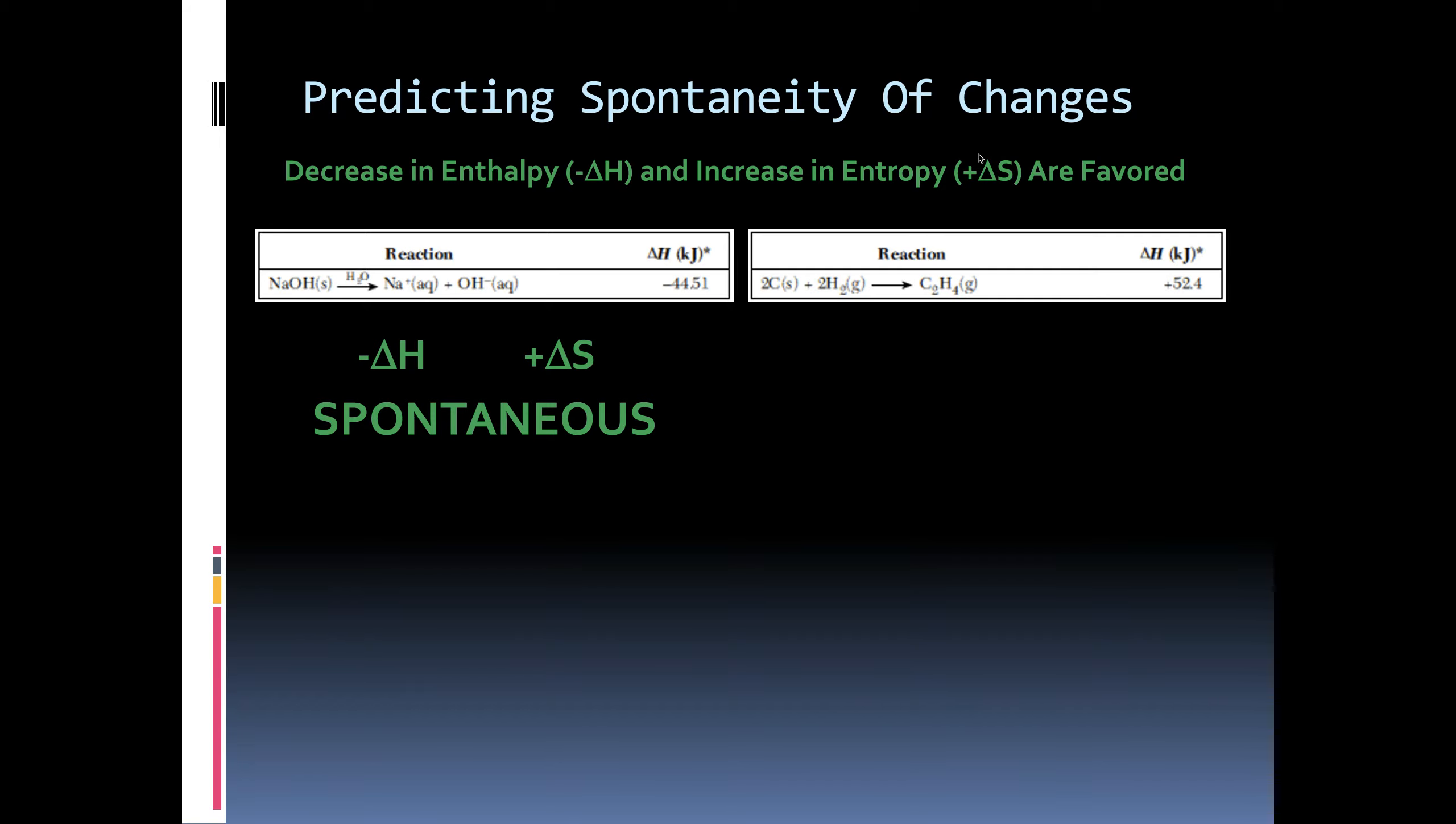How about this? In this reaction, we have a positive delta H. It says so right there. See, plus negative delta H is favored. So a positive delta H will not be favored. No bueno. All right. What about the entropy? Well, we're starting off with solid and gas, and we're ending with gas. However, we started with two moles of gas, and we're only ending with one mole of gas. There's less gas flying around. And with less gas flying around, that's lower entropy. Nature likes increasing entropy, not decreasing entropy.